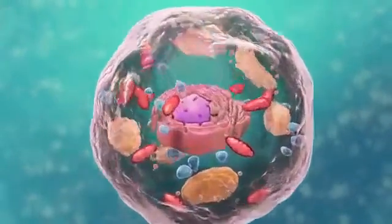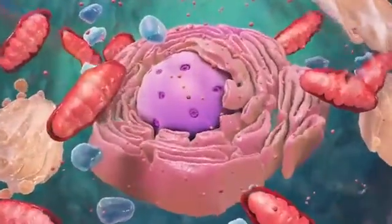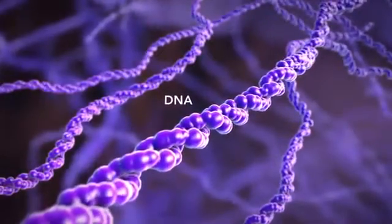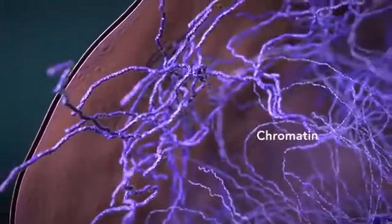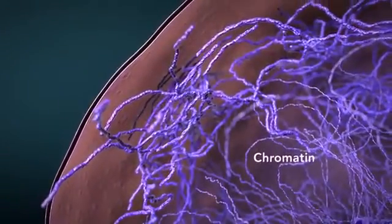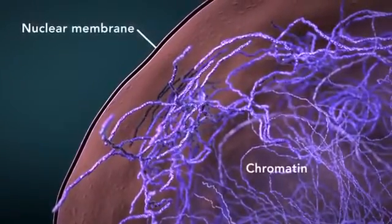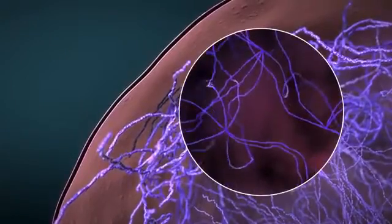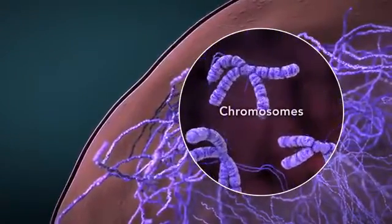Let's start with the nucleus, the control center of the cell. The nucleus contains DNA or genetic material. DNA dictates what the cell is going to do and how it's going to do it. Chromatin is the tangled spread out form of DNA found inside the nuclear membrane. When a cell is ready to divide, DNA condenses into structures known as chromosomes.